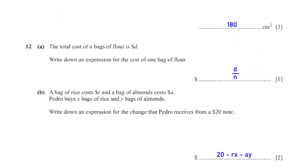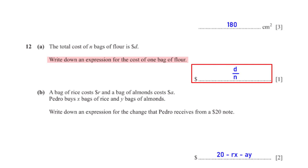The total cost of n bags of flour is d dollars. Write down an expression for the cost of one bag of flour. The cost of one bag of flour equals the total cost d dollars divided by the number of bags n, giving d/n.